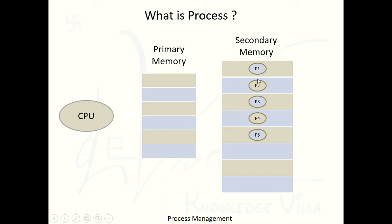Now we are starting with the program. Here there are a number of programs stored in secondary memory — program 1, program 2, program 3, program 4, program 5. Programs are always stored in secondary memory. Every program carries a set of instructions — for example, P1 carries instruction 1, 2, 3, 4, 5, and so on.